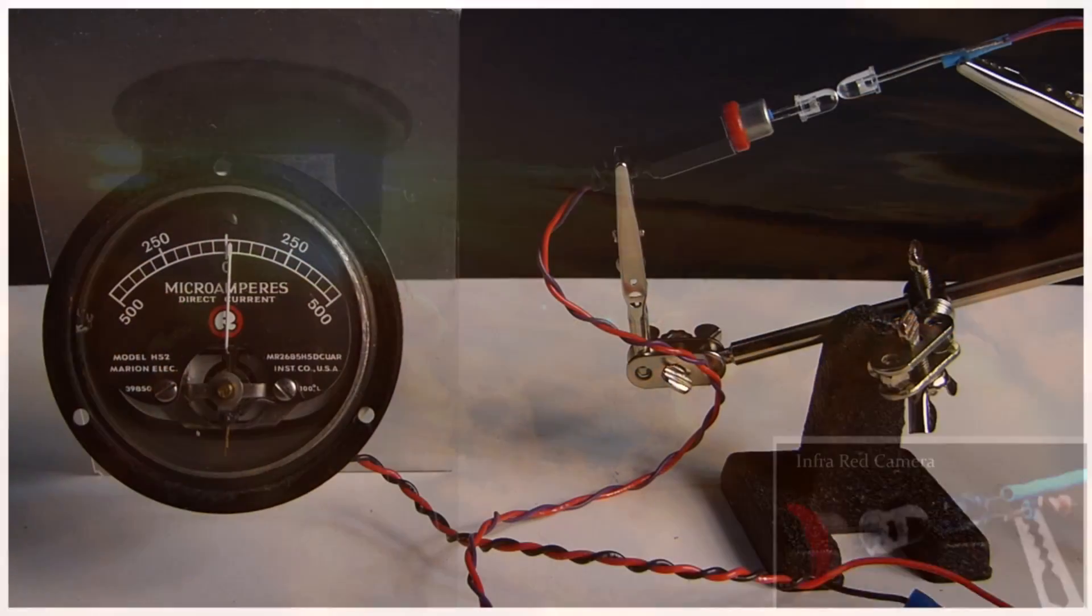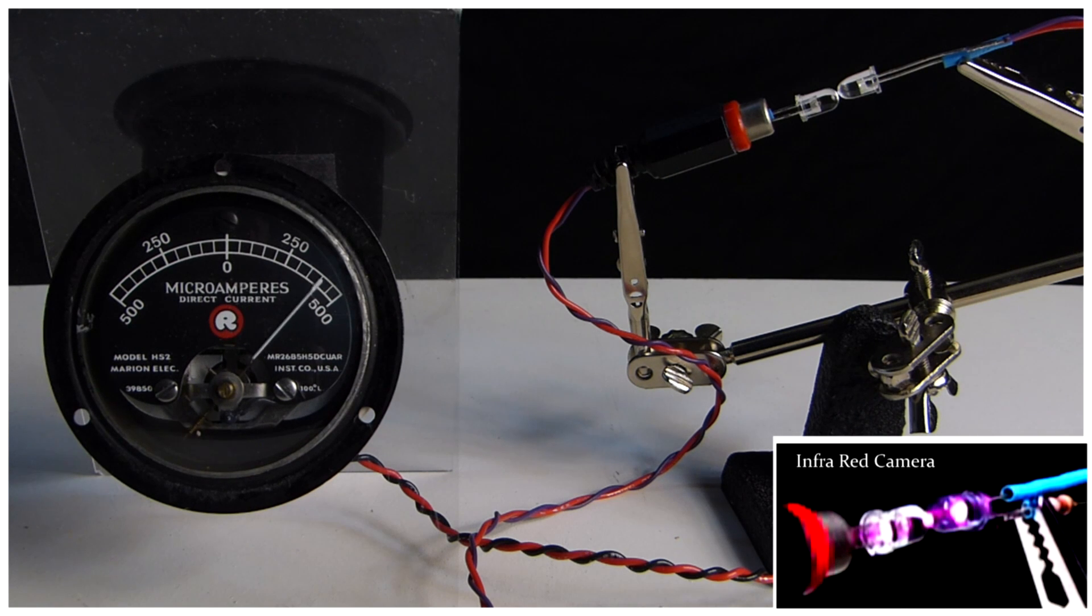Here we have an ordinary infrared LED coupled with a dark emitting diode. As you can see, when the infrared LED is lit, a remarkable amount of energy is produced by the dark emitting diode.